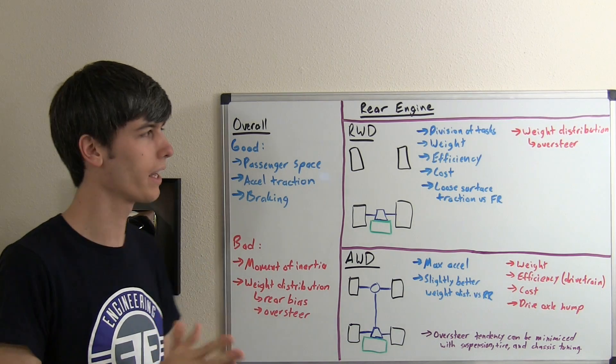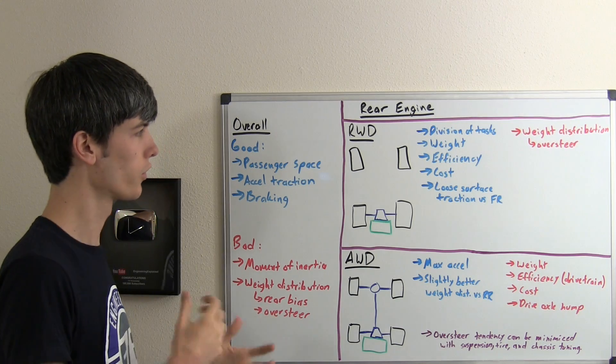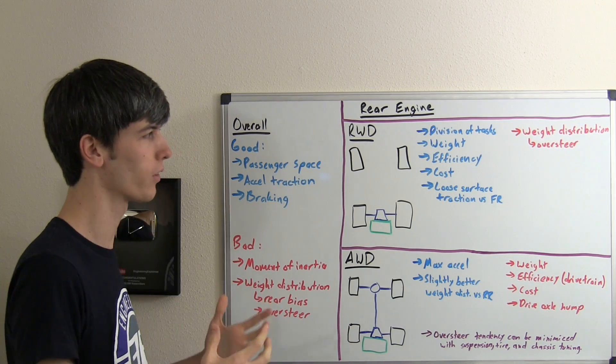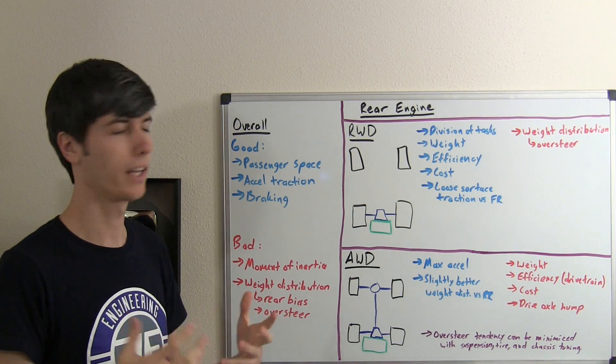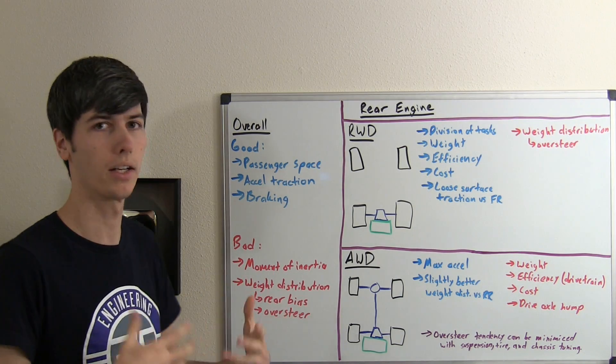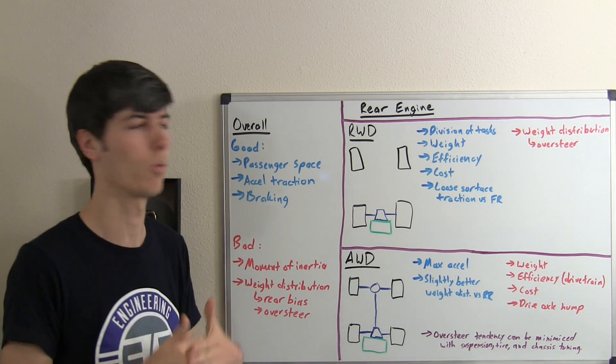This can be mitigated through tuning of the suspension, the tires, and the chassis. People like Porsche have figured it out. These cars aren't going to super easily oversteer, but it is a design-inherent thing that they have to compensate for—the fact that the rear weight bias is going to make it want to oversteer.